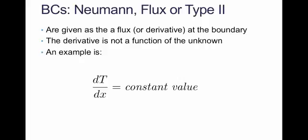Neumann boundary conditions are given as a derivative of the unknown or the function that we're looking for at the boundary. One example is that you could have the derivative of temperature with respect to x as being a constant. It could, in fact, be 0, but it is given as some constant or some known function.